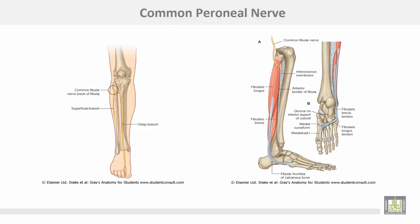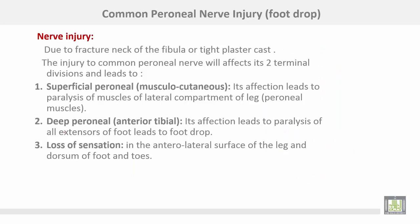This is the common peroneal nerve. It starts as one of the two terminals of the sciatic nerve, is related laterally to the neck of the fibula — where you can roll it against the bone — then divides into two terminals: the deep branch and the superficial branch.